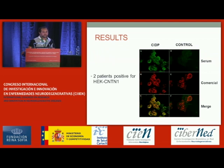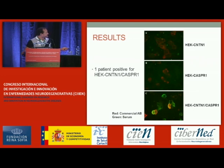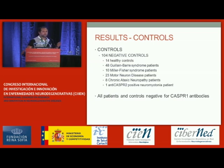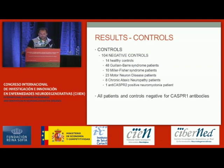We moved to immunocytochemistry to confirm the results. Of those three patients, two had antibodies against contactin-1 transfected HEK cells, and the other patient did not react when only contactin-1 was transfected, but reacted when both contactin-1 and Caspr-1 were co-transfected — and only in that situation. From the controls, we had 104 negative controls of different diseases, many of autoimmune origin and resembling CIDP. All patients and controls were negative for Caspr-1 antibodies when Caspr-1 was tested alone, not in combination with contactin-1.